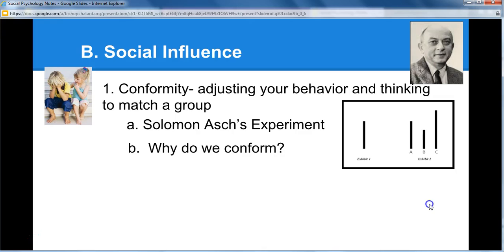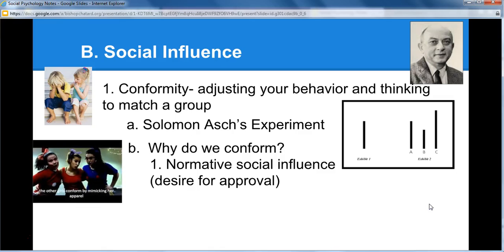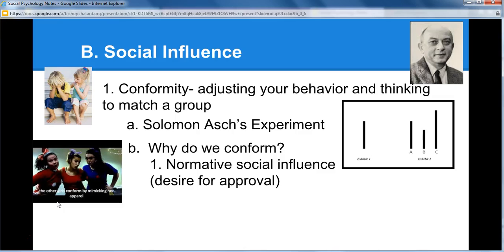So why do we conform? The first reason is normative social influence — the idea that we want to be liked and have a desire for approval. In Asch's experiment, people wanted to say C because they wanted everybody to like them; they didn't want to look like a fool. This also shows up in teenagers mimicking each other's apparel and hairstyles because they want approval from the group.